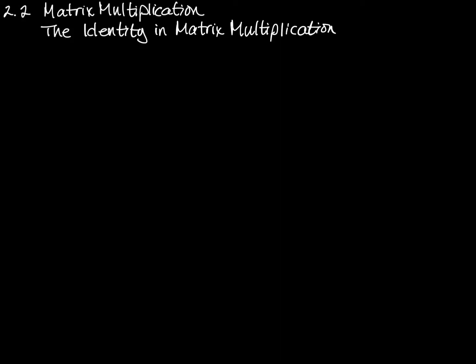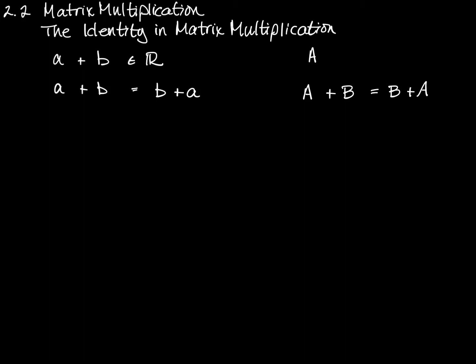When we talked about the properties of matrix addition, I likened that to the properties of addition of real numbers. For example, I said that the real number A plus the real number B was still a real number. Not only that, but we knew that A plus B could be added in any order — we could add B plus A and get the same result. As it happens, that's also true with matrices: A plus B is the same as B plus A. And the matrix A plus the matrix B is in the set of all matrices that are M by N and composed of real numbers.